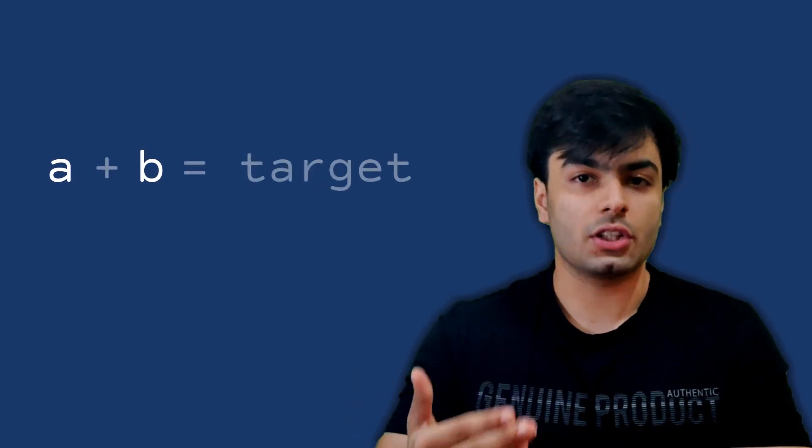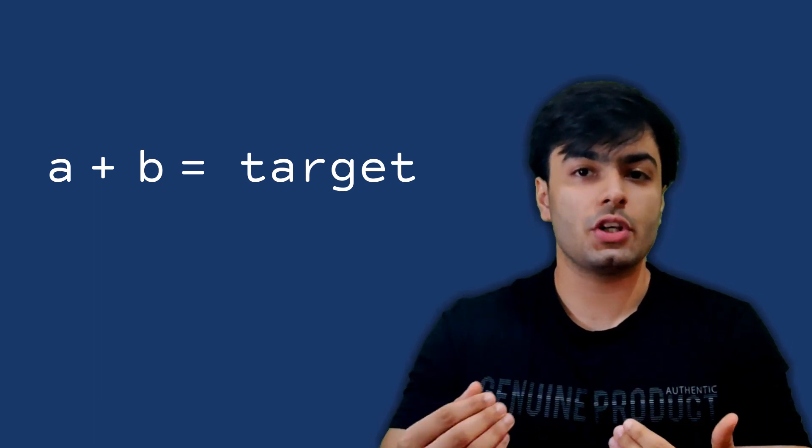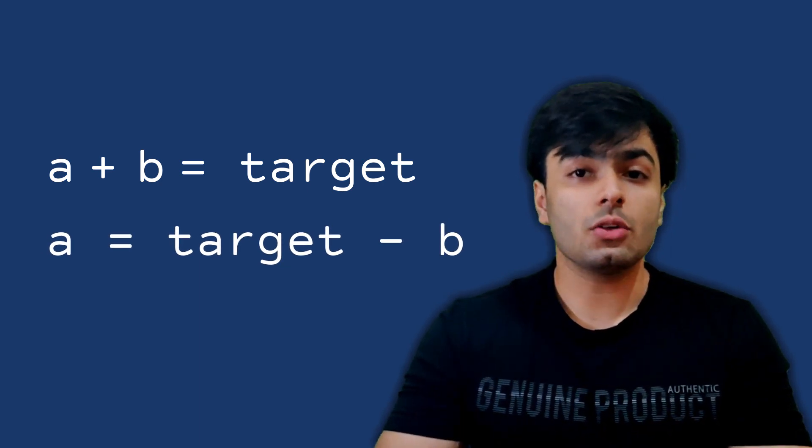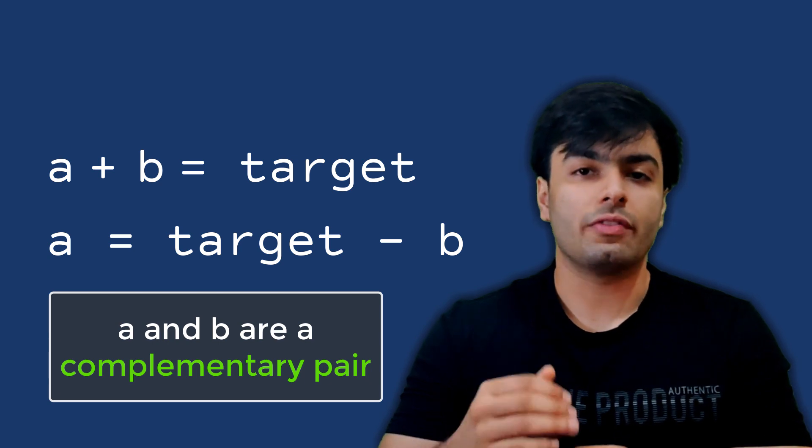For now, let's forget about the indices. Essentially, we need to find two numbers from the list, let's call these a and b, that add up to the target. If we modify this equation such that we make a the subject of the equation, we get a is equal to the target minus b. In other words, with reference to the target, b is a complement of a or vice versa.